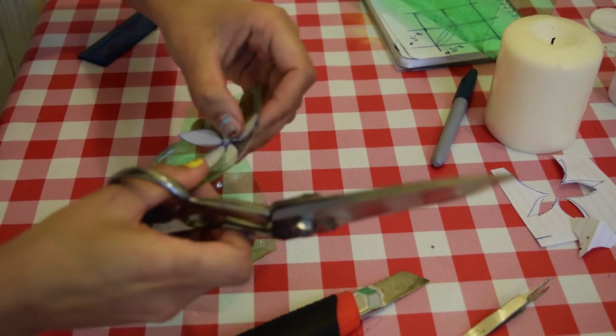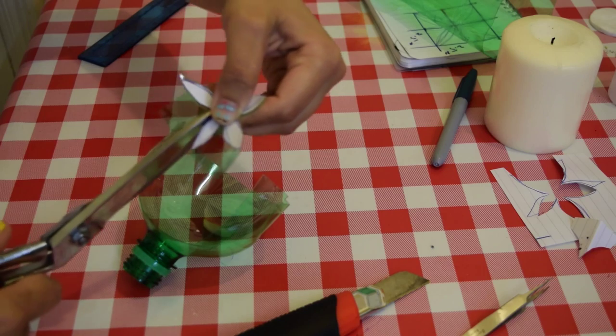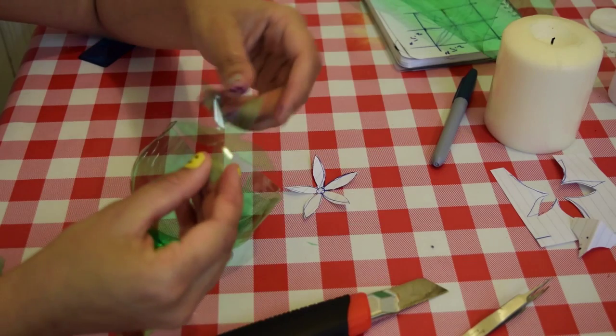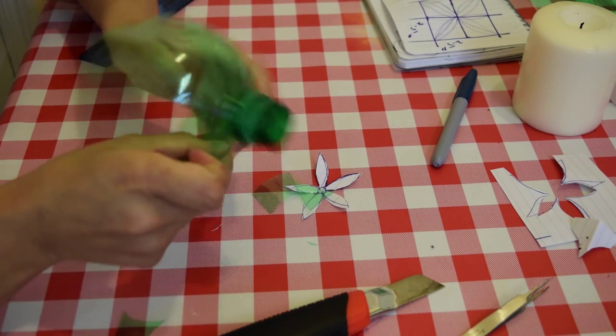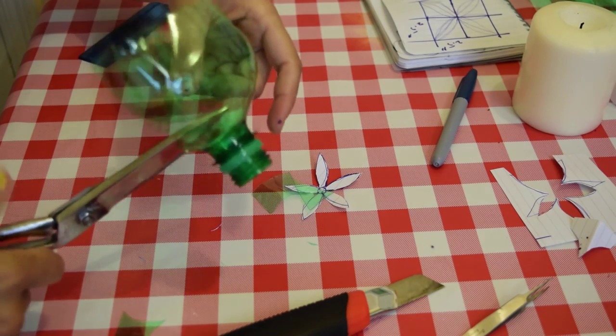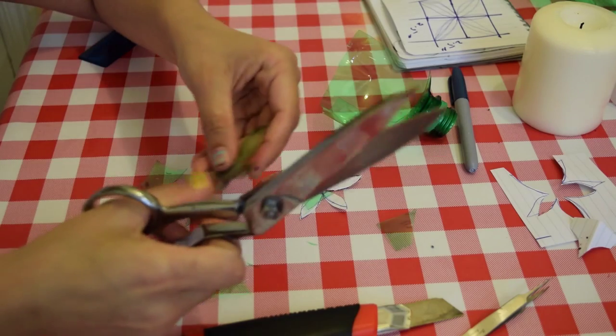Now hold the template firmly and cut out the bottle. Be careful with your scissors. Now you see this one petal is cut. Same way, we're going to cut the rest of the petals. We are going to cut three petals of the same size, then we'll use the same template to cut two more smaller ones.